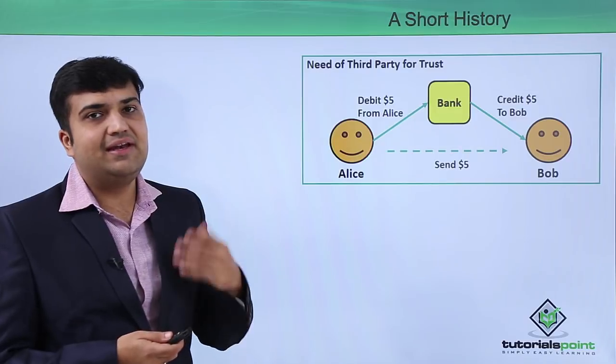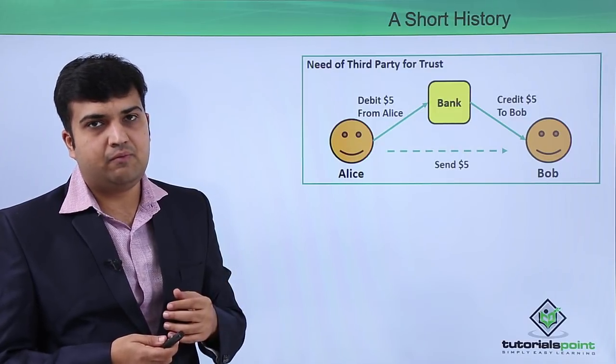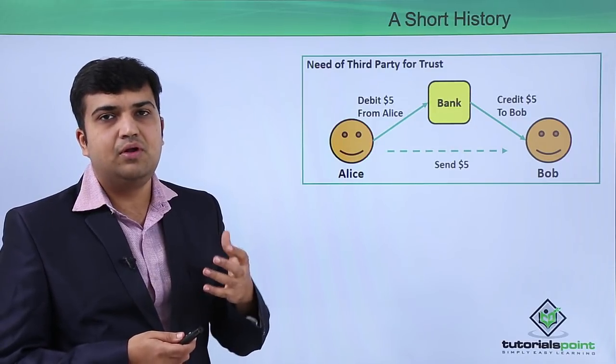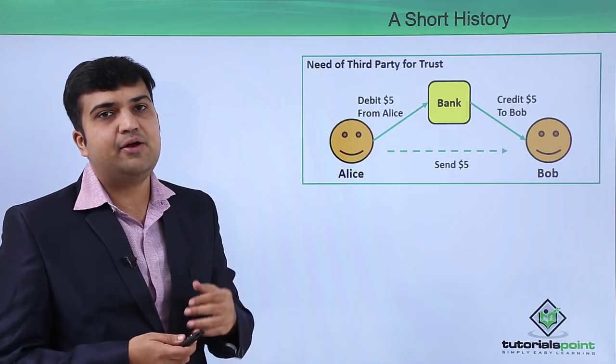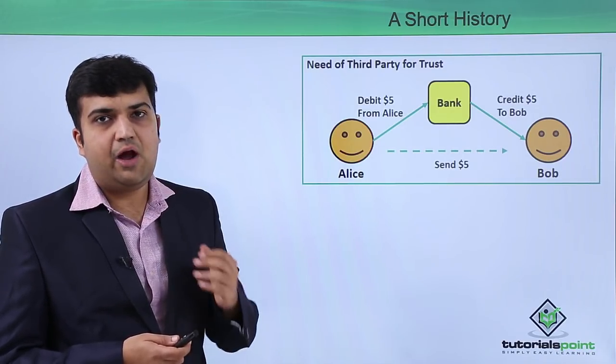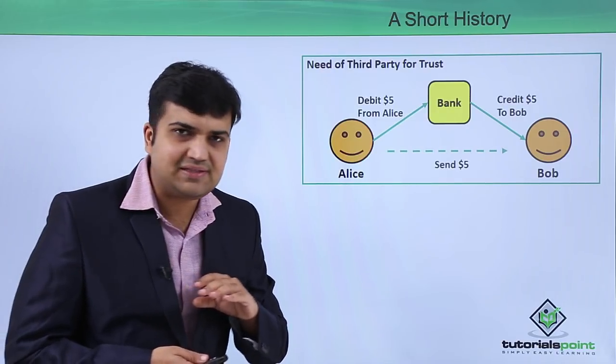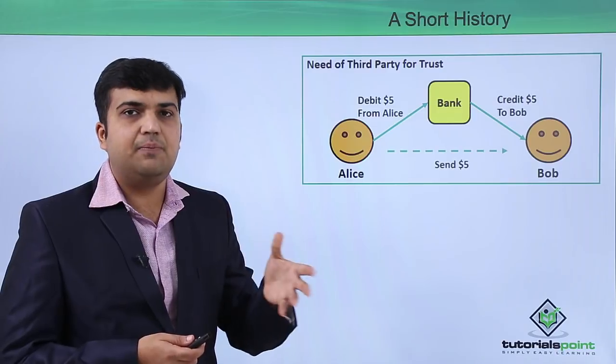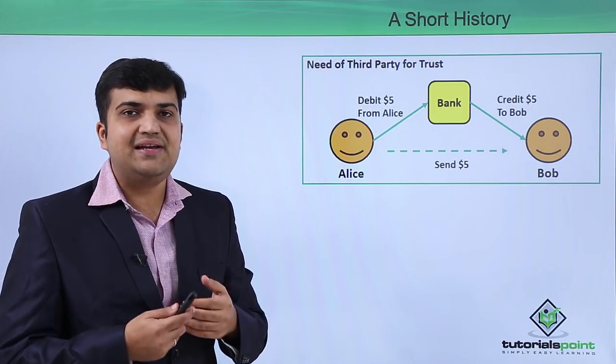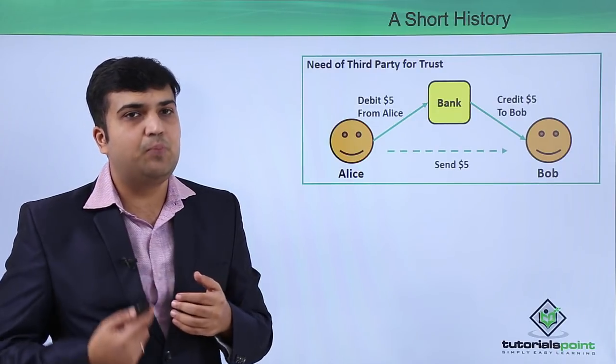Next is the need for a trusted third party. One of the major design goals of blockchain is to eliminate the need for a trusted third party. In any conventional payment system, we have a mediator or a third party which mediates the transaction of money between two parties.